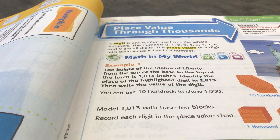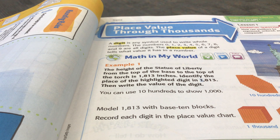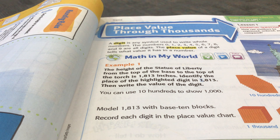A digit is any symbol used to write whole numbers. The numbers 0, 1, 2, 3, 4, 5, 6, 7, 8, and 9 are all digits.